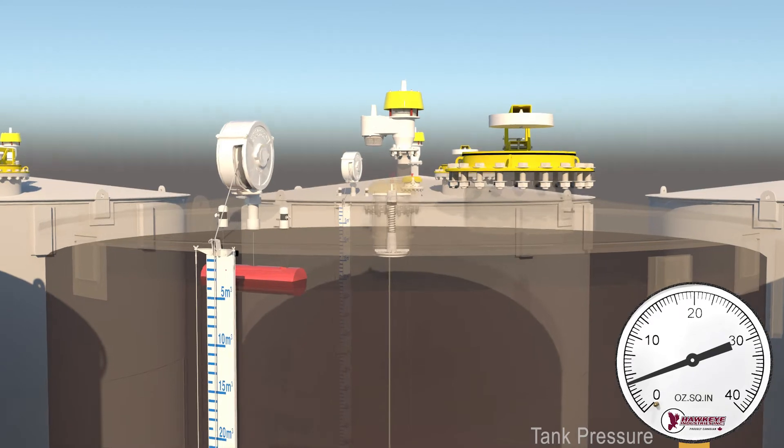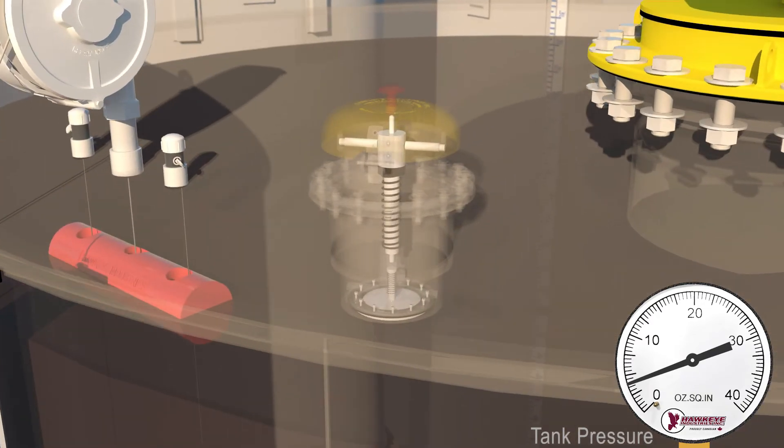In this example, the Marsh Hawk's pressure setting is set to relieve at 6 ounces per inch squared, and the vacuum setting is set at 0.4 ounces per square inch.